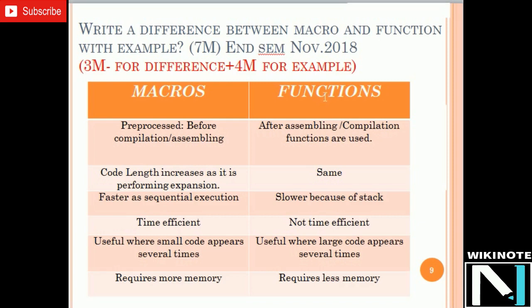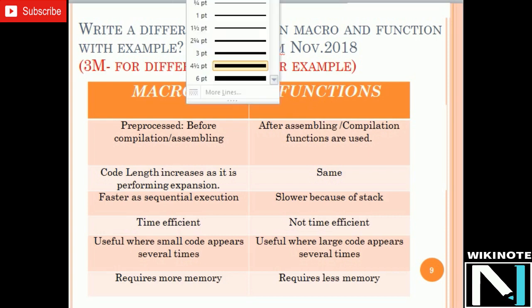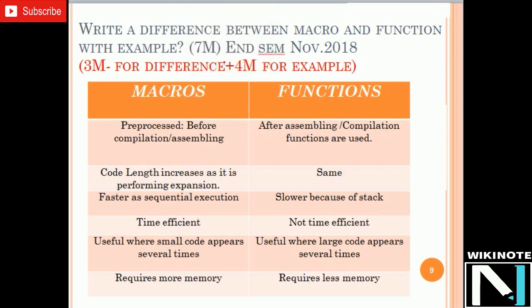Initially we will go for the difference. The difference here was for 2 marks, but it may be possible that in your exam you will have this difference for 4 or 6 marks. If the question is for 4 marks you have to write 4 parameters, and if it is for 6 marks you have to write 6 parameters. So we will see now the difference between macros and functions.